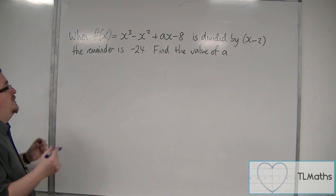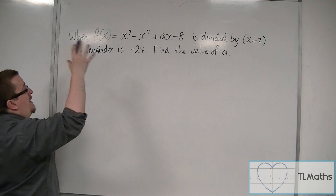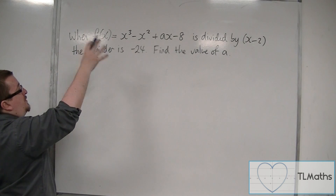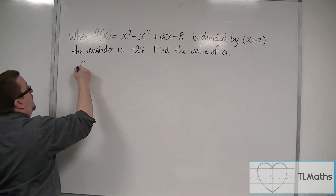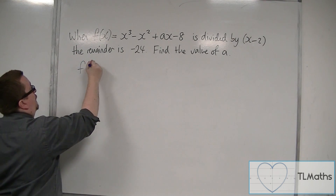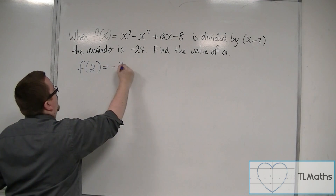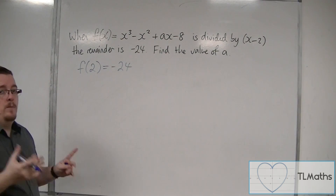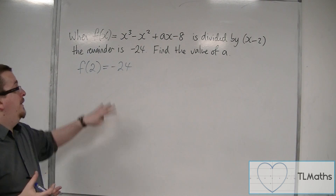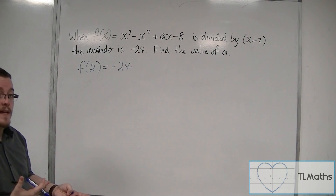So what we're told is that when the polynomial is divided by x minus 2, the remainder is minus 24. So f of 2 must be equal to minus 24, and we're going to use that fact in order to work out the value of a.